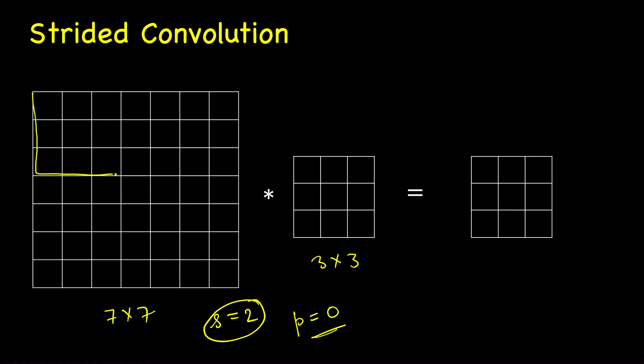Let's say this is 7 cross 7, this filter is 3 cross 3, and we have a stride equal to 2. So instead of taking one step we will take two steps. And let's assume that p is 0 for this example.